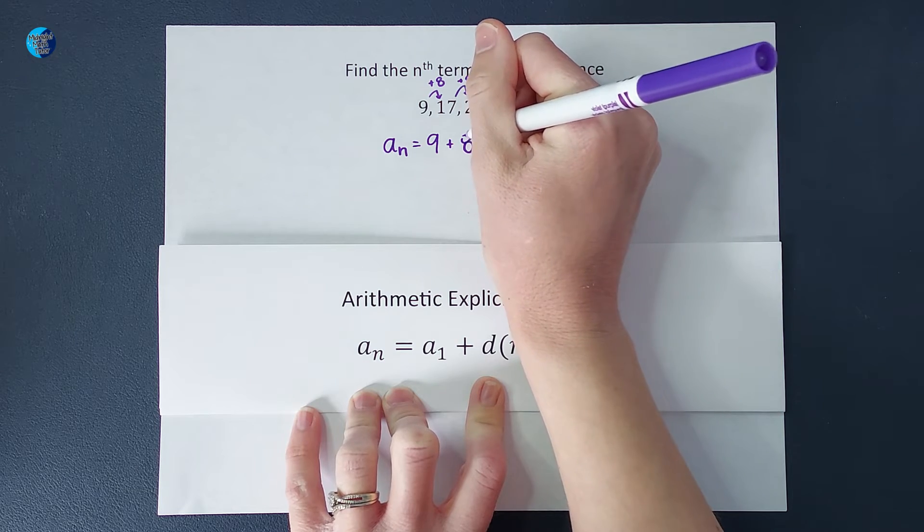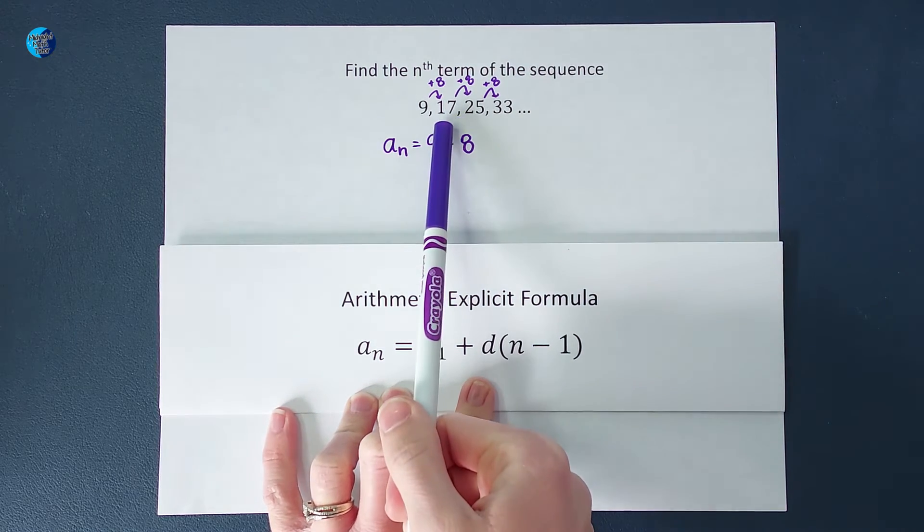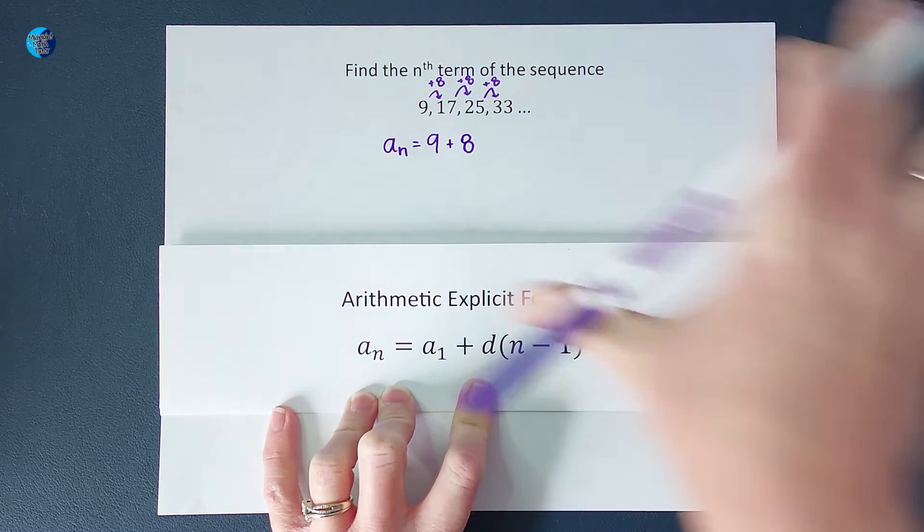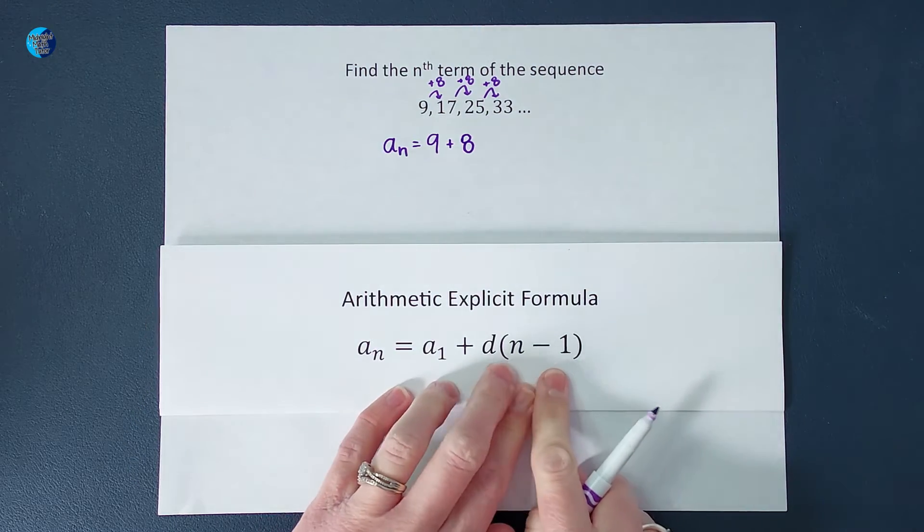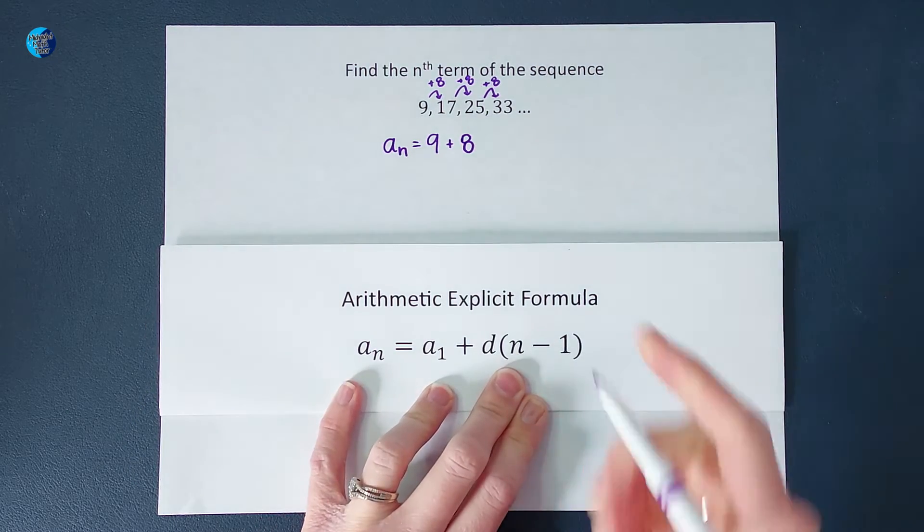Now, if I just left it like that, that would give me my second number. That would give me the 17. But what about the rest of them? Well, that's where this n minus 1 comes in.